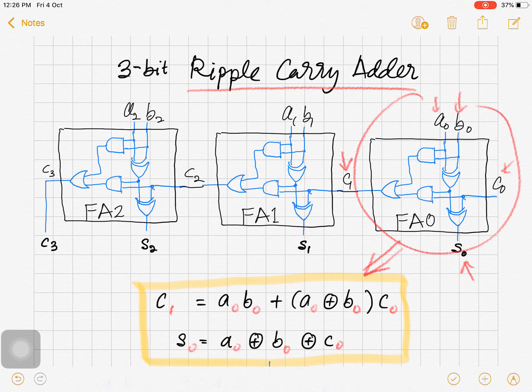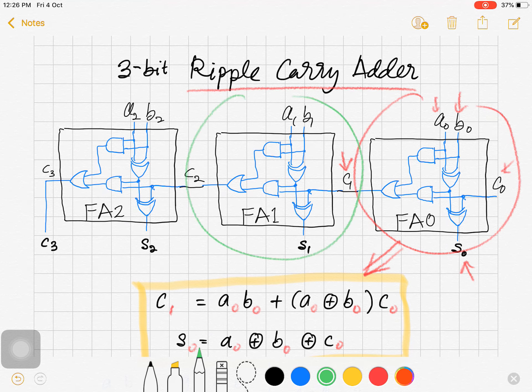Similarly, if we consider the first bit full adder, the formula becomes: because the carry out for this first bit full adder is C2, that equals A1 B1 or A1 XOR B1 C1, and the sum is S1 equals A1 XOR B1 XOR C1.